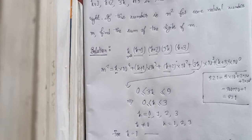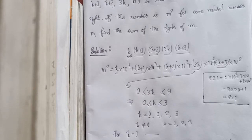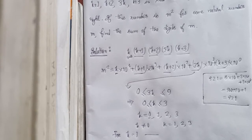For k equal to 2: m squared is equal to 1 into 10 to the power 4, plus 3 times 10 cubed, plus 4 times 10 squared, plus 6 times 10, plus 5. So the digits are 1, 3, 4, 6, 5 — that is m squared equals 13465.